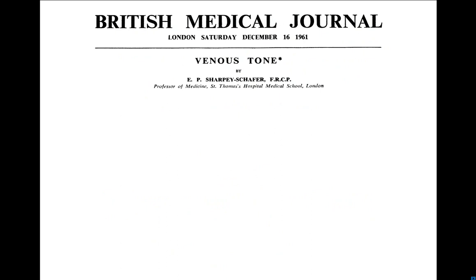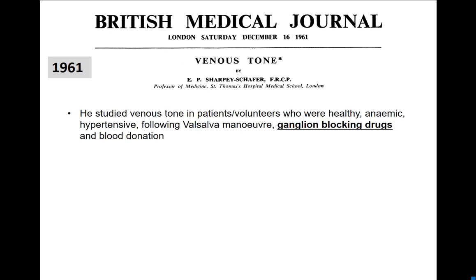We can go back to 1961 — the date of that Shires paper I mentioned earlier, more than 55 years ago — to this paper by Professor Sharpie Schafer, who was professor of medicine at St. Thomas' Hospital in London. He was interested in the effect of lowering blood pressure with the first group of drugs used to treat essential hypertension: the ganglion blocking drugs. He also studied a large number of different patient groups — fit, healthy patients, patients with anaemia, elderly and so on.